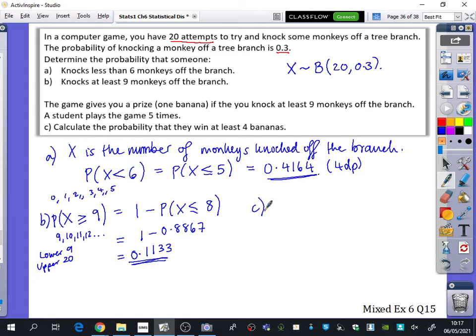This is where the question gets properly interesting though. So the game gives you a prize of one banana if you knock at least nine monkeys off the branch. A student plays the game five times. Calculate the probability that they win at least four bananas. This is different now. What has happened? What's changed now?